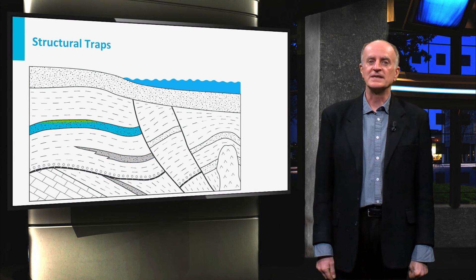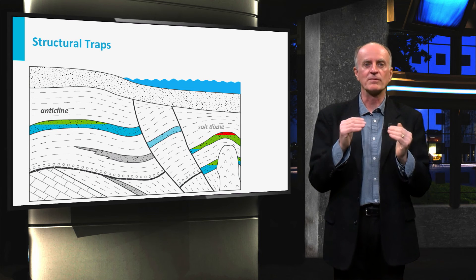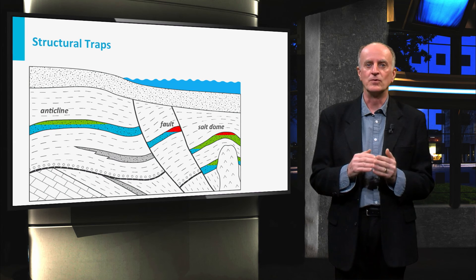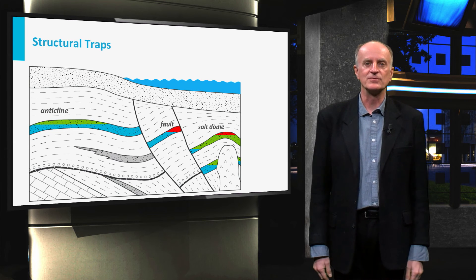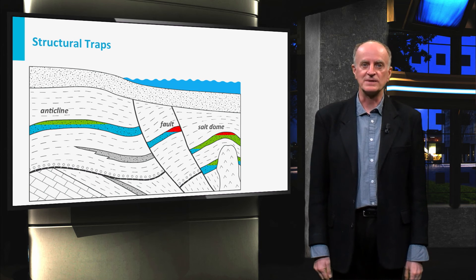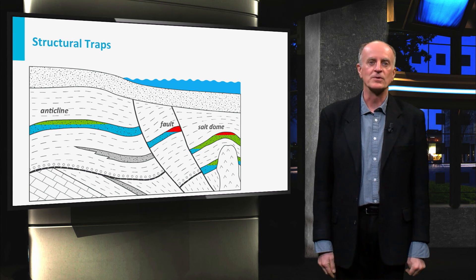Structural traps are associated with simple anticlines or with faults. These can form barriers to flow or disrupt the lateral continuity of the reservoir. The age of these traps is related to the age of folding or faulting.